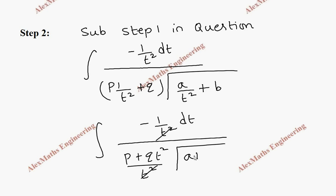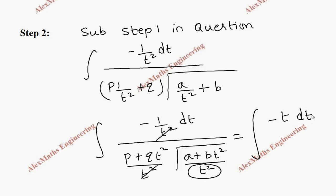Similarly, taking LCM for the square root term gives A plus Bt² by t². We can take t outside the square root to the numerator, giving minus t dt divided by P plus Qt² into the square root of A plus Bt².